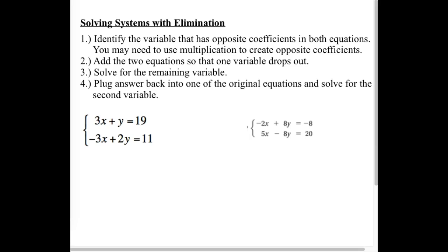Our steps. It says, identify the variable that has opposite coefficients in both equations. You may need to use multiplication to create opposite coefficients. What do we mean by opposites? Positive one, negative one, right? What happens when you add opposites together? They cancel each other out. That's our goal. We want to get one of the variables to be opposites, so that when we add the equations together, they disappear. First step is to get those opposites. Second step is we're going to add the two equations together, so a variable will drop out. We can solve for the remaining variable. And then it's back to that same process we had for substitution. Once we know the first variable, we can substitute it back in to get our second one. So it's just the first couple steps that are going to be a little different.